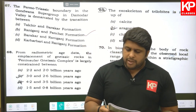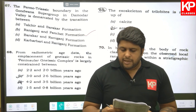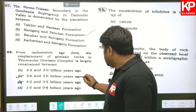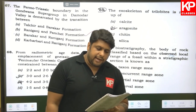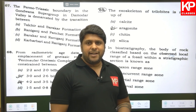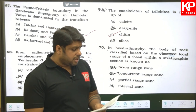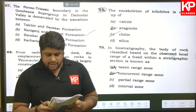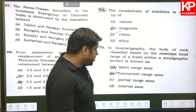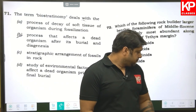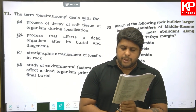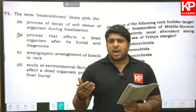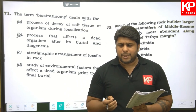Question sixty-eight: from radiometric age data, the emplacement of gneissic rocks in the Peninsular Gneissic Complex is largely constrained between 3.0 to 2.6 Ga — B is the right answer. Question sixty-nine: the exoskeleton of trilobites is made up of chitin — C is the right answer. Question seventy: in biostratigraphy, the body of rock classified based on the observed local range of a fossil within a stratigraphic section is known as a partial range zone.